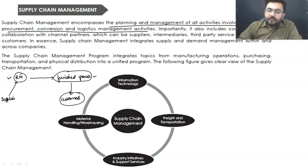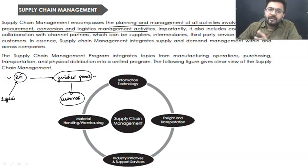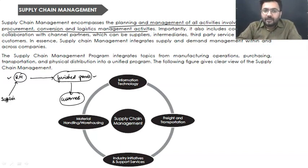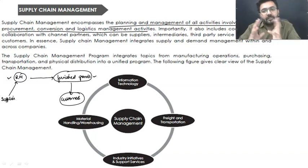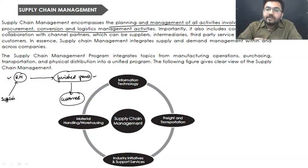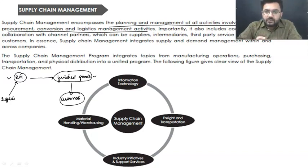If I talk about Maruti, Maruti is not manufacturing anything. What Maruti people are doing — they are just giving their material to third parties and those parties are manufacturing the product. After that, Maruti is just assembling the products and making a car. So they are making a car that way. Understood. Moving ahead to the next part.